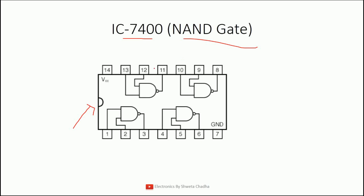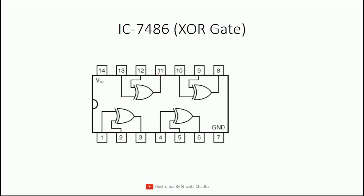Next is the XOR gate, IC number 7486. Again, pin 7 is ground and pin 14 is VCC. Pin assignments: pins 1 and 2 input, 3 output; pins 4 and 5 input, 6 output; pins 10 and 9 input, 8 output; pins 13 and 12 input, 11 output.